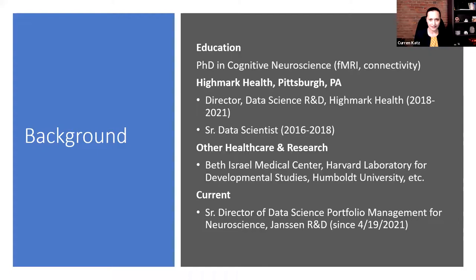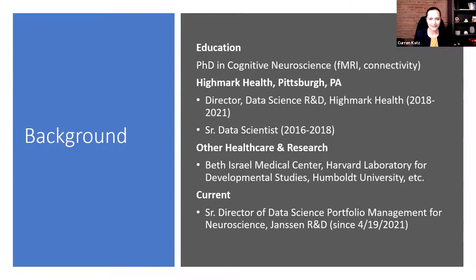I started as a data scientist at Highmark for a year or so, building models. One of the first I built was one predicting high-cost claimants for the health plan — very general, across a ton of different conditions and situations. My background is as a cognitive neuroscientist by training. When I got to this business setting, the questions were really broad, but that is actually at times a very good match for machine learning and AI methods.